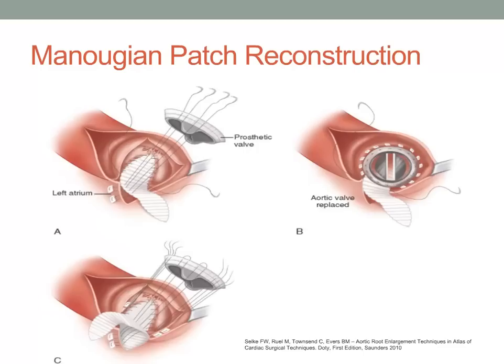Following root enlargement via an incision across the non-coronary portion of the aortic annulus into the anterior leaflet of the mitral valve and roof of the left atrium, a diamond-shaped patch of pericardial or prosthetic material is cut to appropriate size. Reconstruction is initiated by placing the patch into the deepest portion of the incision and repairing the defect in the anterior leaflet of the mitral valve with the patch using interrupted or continuous sutures without pledgets. At the level of the aortic valve annulus, interrupted sutures with pledgets are placed and passed first through the patch and then through the prosthetic valve. Remaining valve sutures are placed through the aortic annulus in standard fashion. If the left atrial wall is flexible and the defect is small, it can be approximated directly to the patch material; otherwise, a second patch is fashioned to reconstruct the left atrial defect.